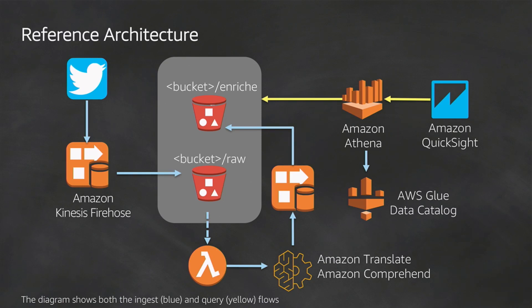The second Kinesis service is Firehose. Firehose takes all of that data — whether it's coming from a Kinesis stream or posted directly into the Firehose — and sends it somewhere else: Splunk, Elasticsearch, S3. It's basically a way to send data off to your data warehouse.